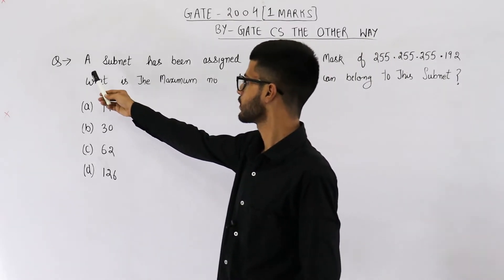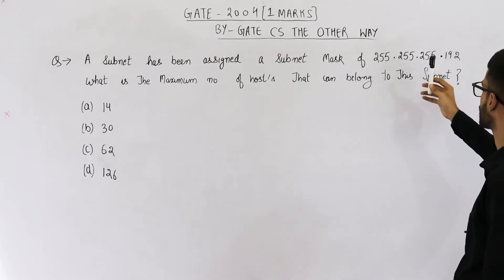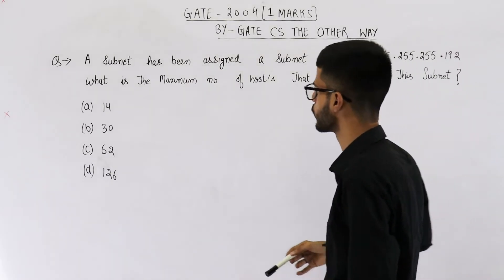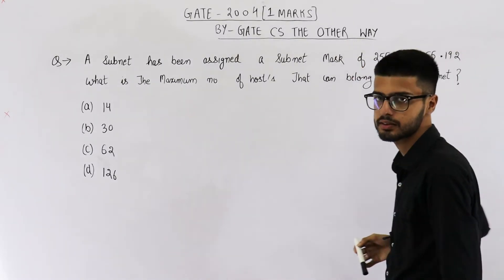Read the statement. They are saying a subnet has been assigned a subnet mask of 255.255.255.192. What is the maximum number of hosts that can belong to this subnet?